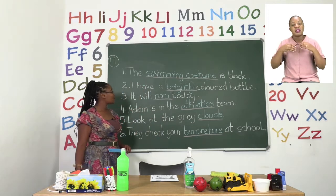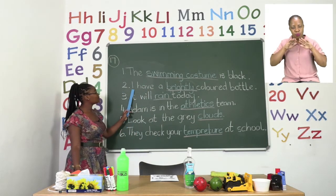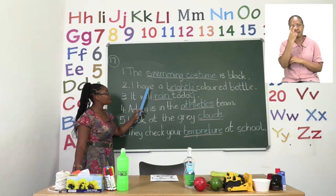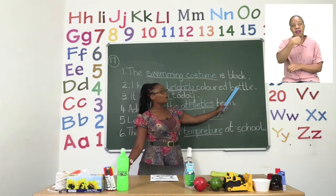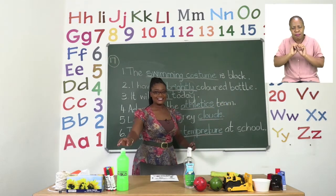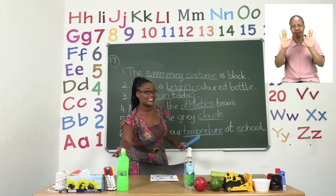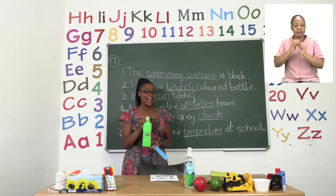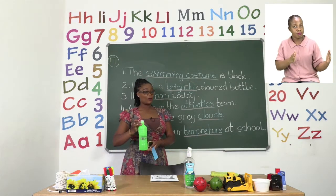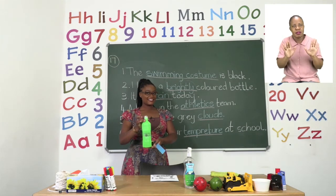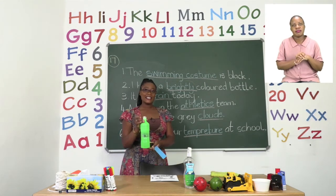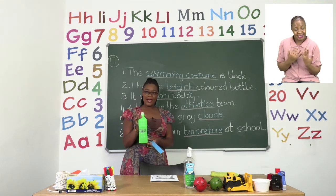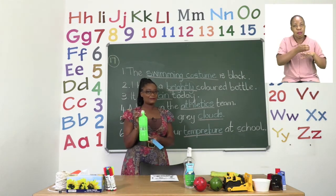The next sentence, number two, says: I have a brightly coloured bottle. You can definitely see that on my table today I have a brightly coloured bottle. This is a green bottle — not just any green, it's a brightly coloured green bottle.